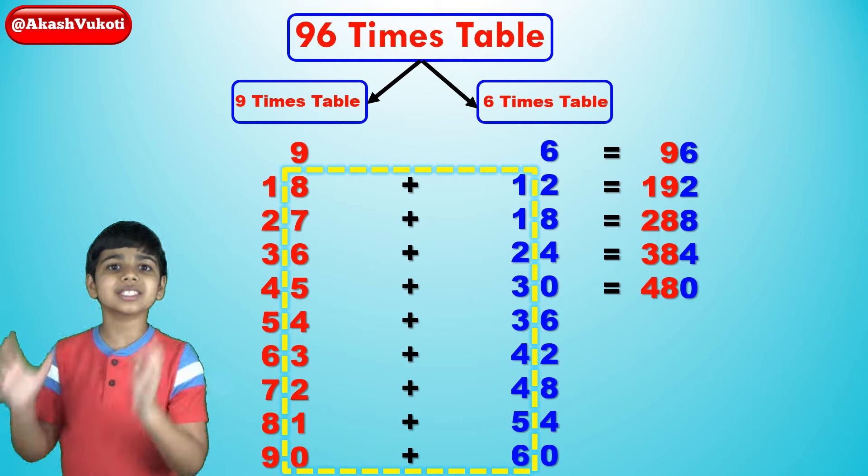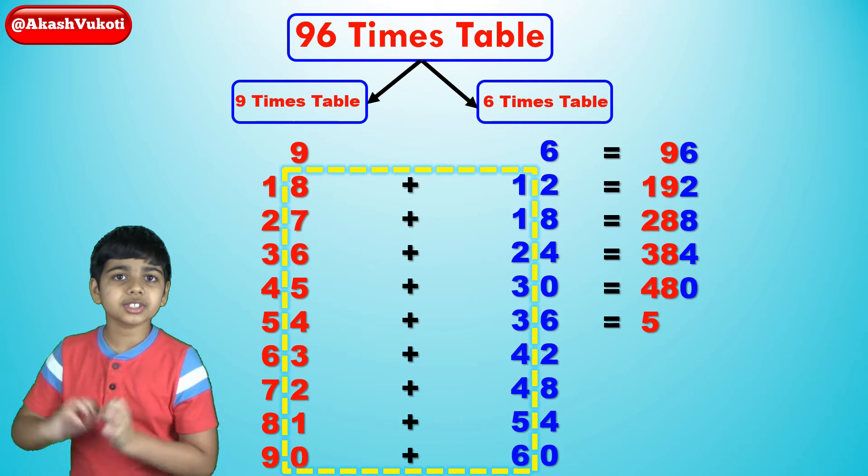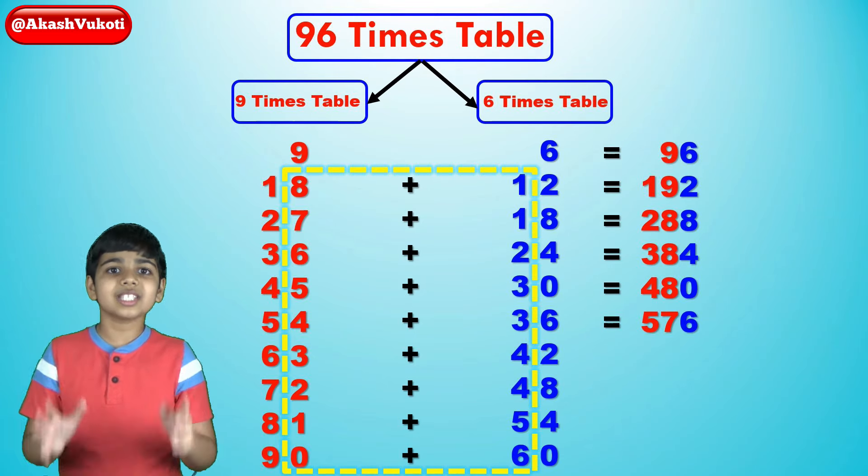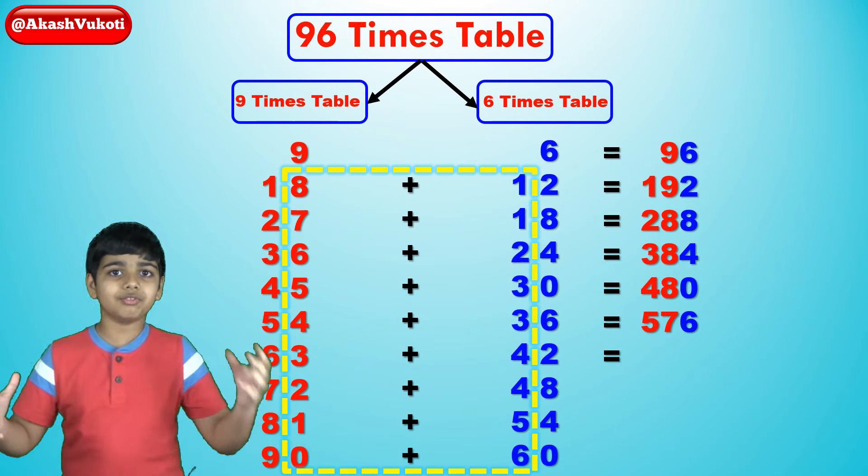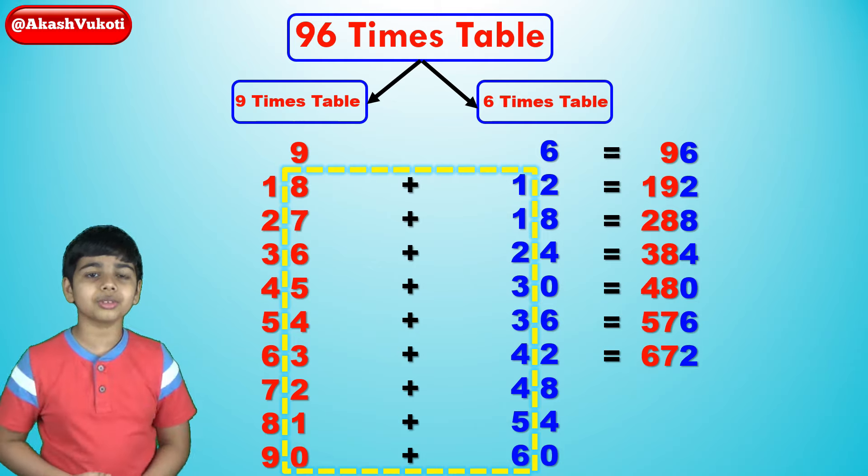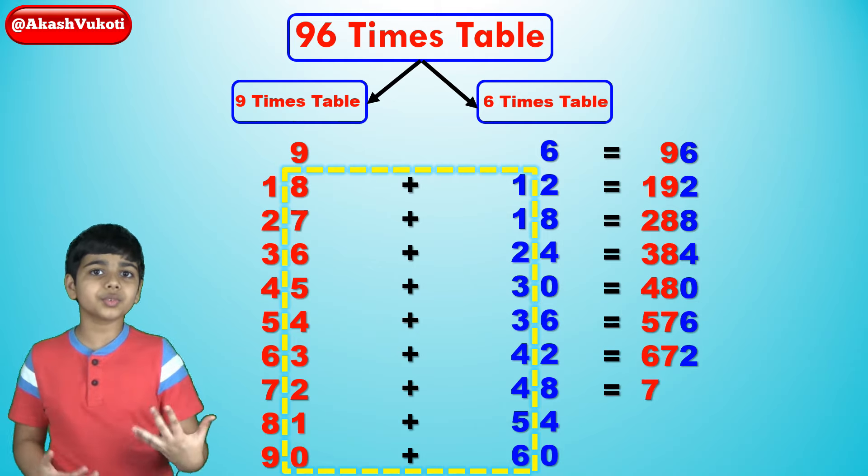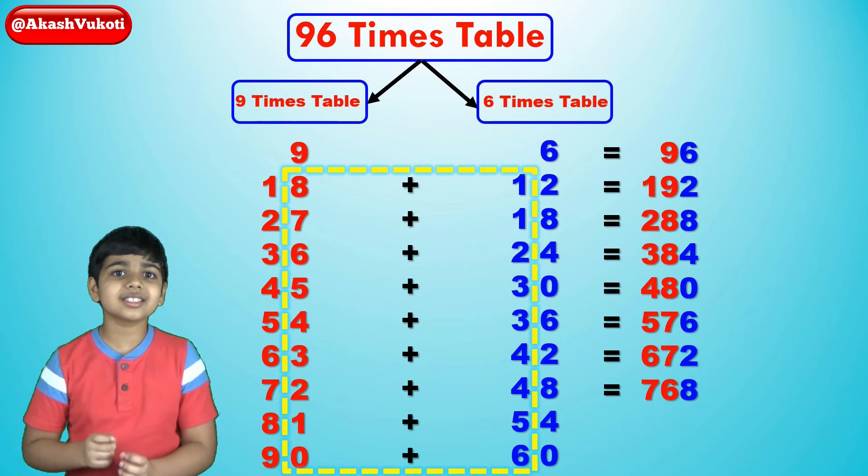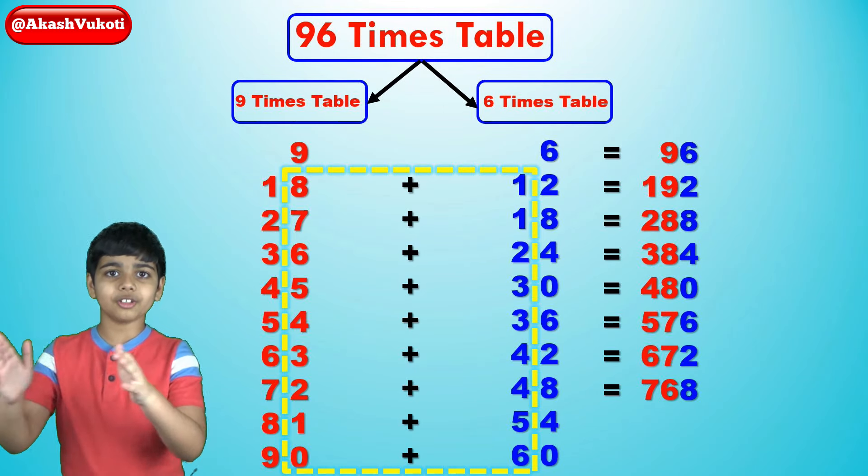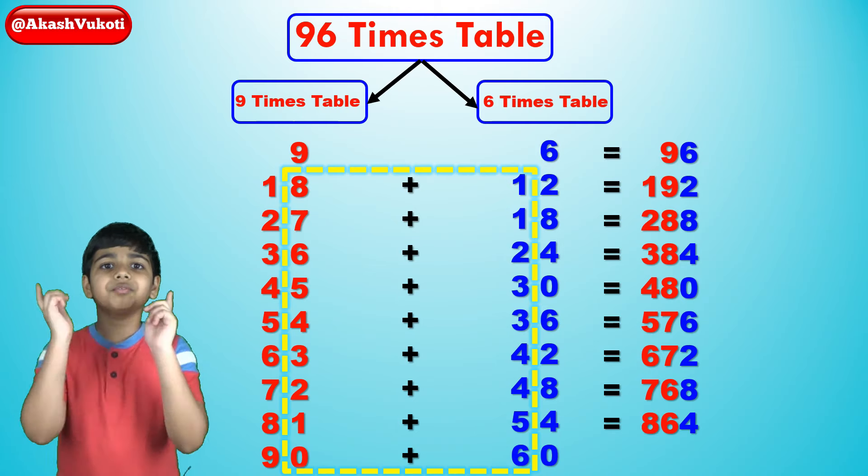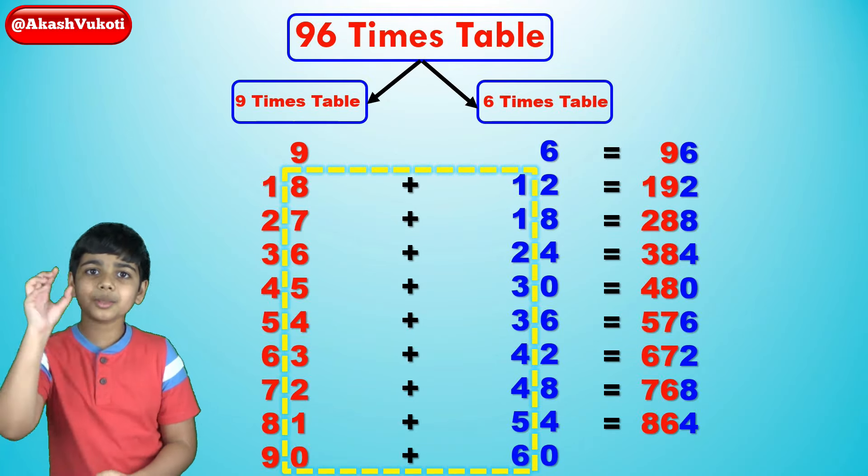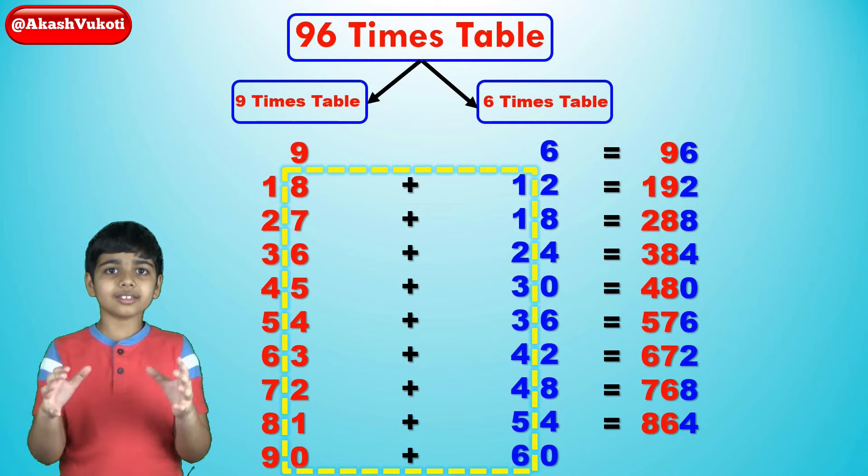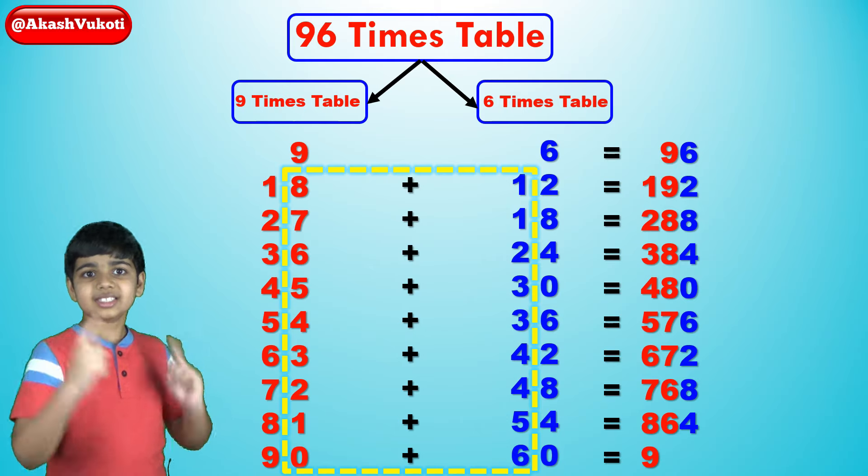And then, 96 times 6 is 54, 36 becomes 576. Then, 96 times 7 becomes 63, 42, 672. Then, 96 times 8 is 72, 48, 768. Then, 96 times 9 becomes 81, 54, 864. And finally, 96 times 10 is 90, 60. So, we add that up and get 960.